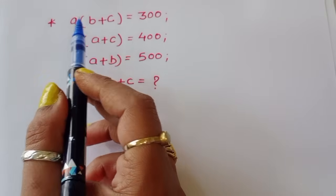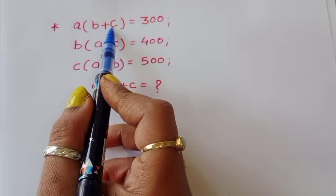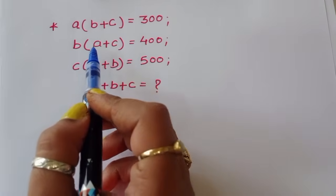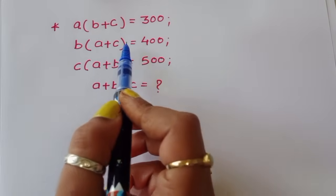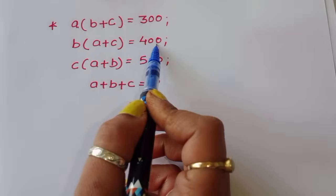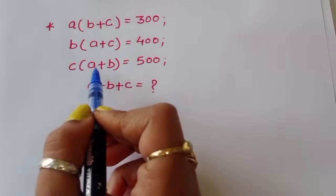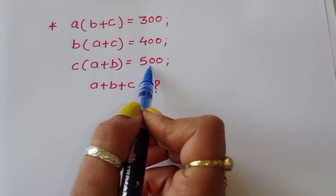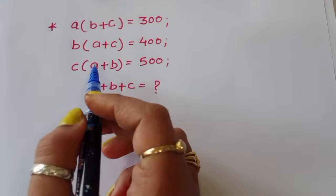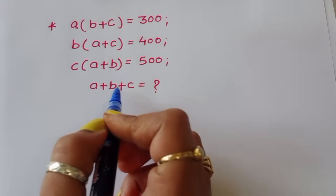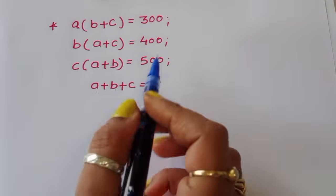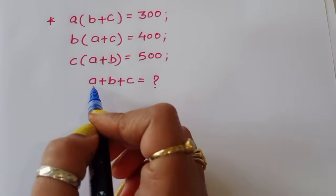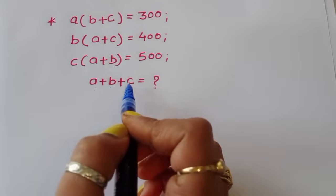The problem is given: A times (B plus C) is equal to 300, B times (A plus C) is equal to 400, and C times (A plus B) is equal to 500. We have to find out the value of A plus B plus C.